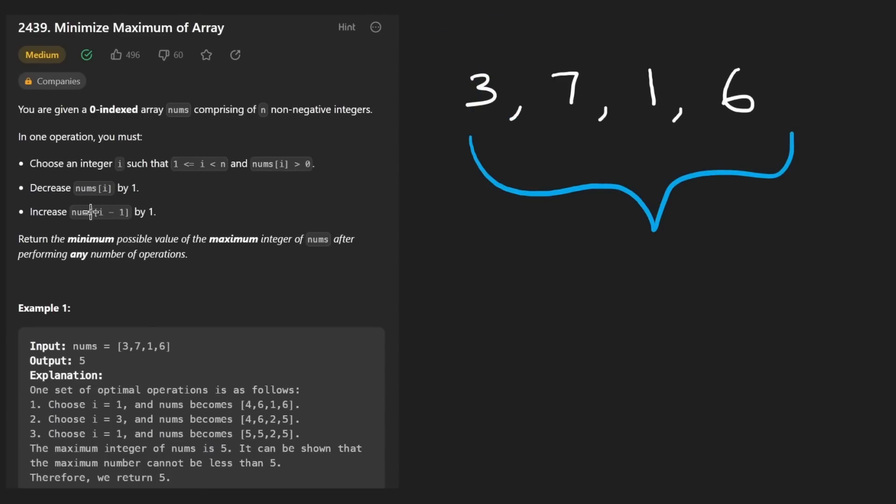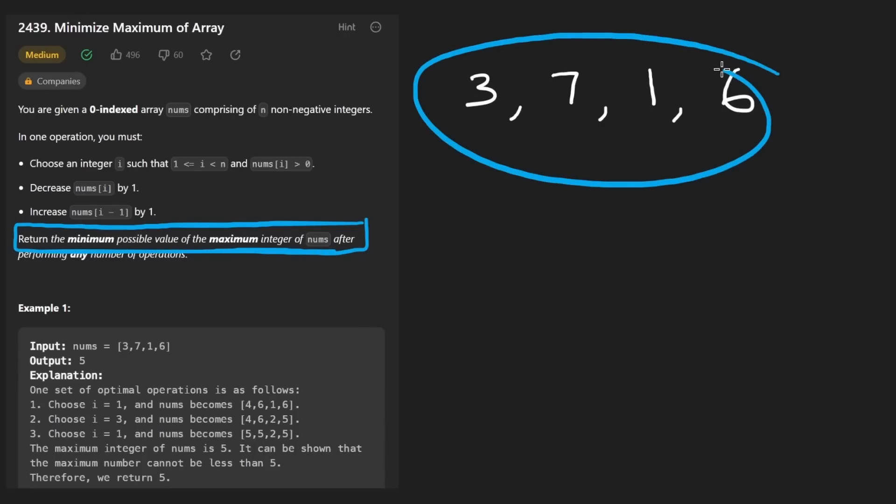And given these operations, we just want to return the minimum possible value of the maximum integer of nums after performing any number of operations. So that's the simple part. We can perform this operation anytime we want, like an infinite number of times if we want. This part, you'll probably have to read a few times to understand what exactly it's saying. Basically, in this array, we're always going to return the maximum value. In this case, it's seven.